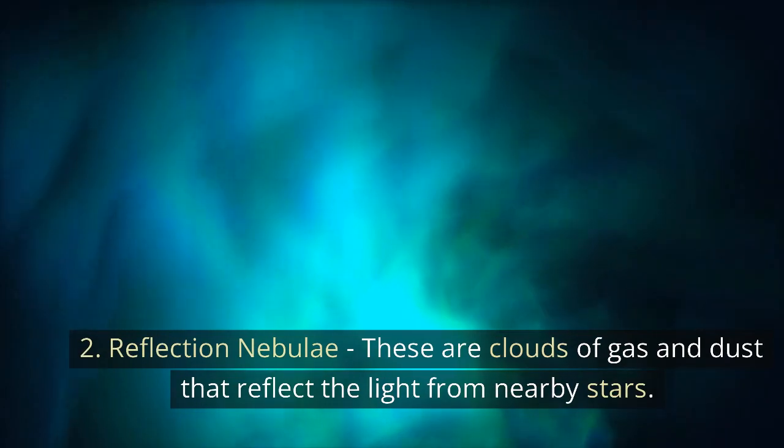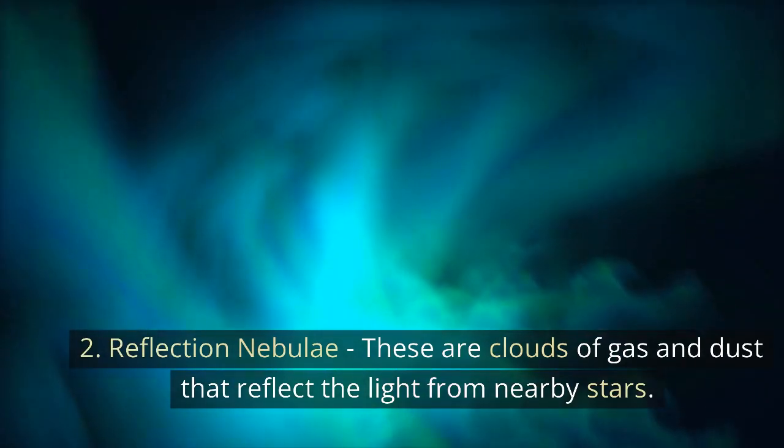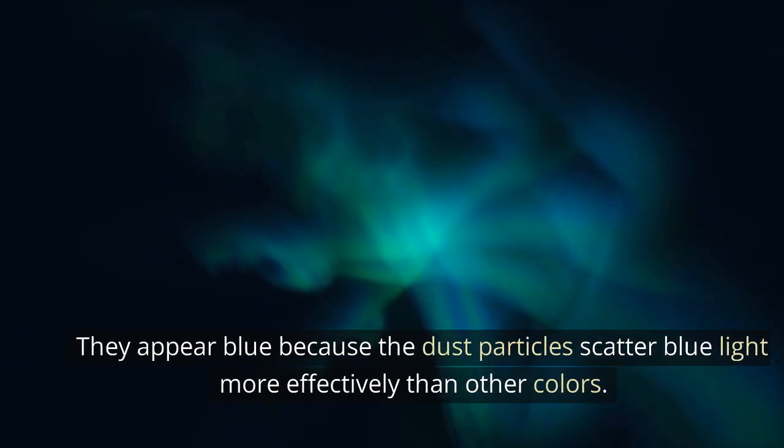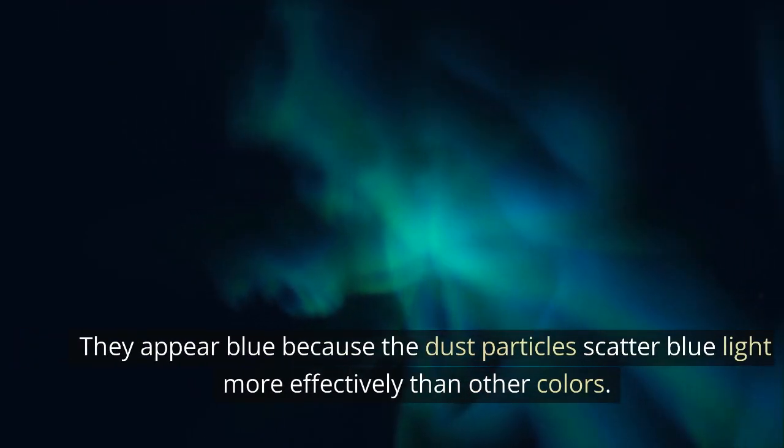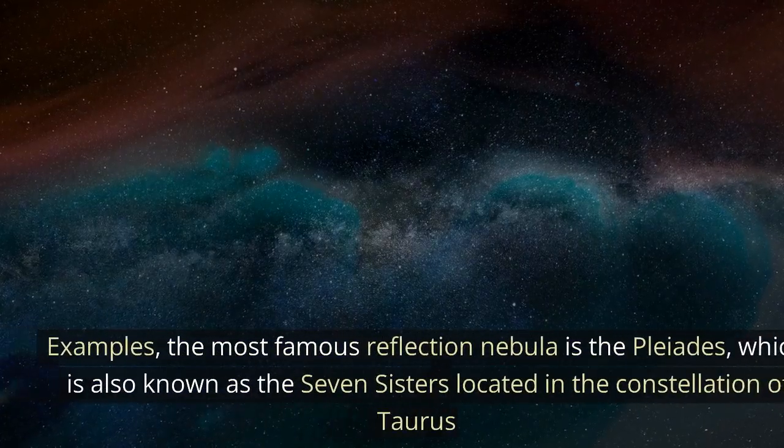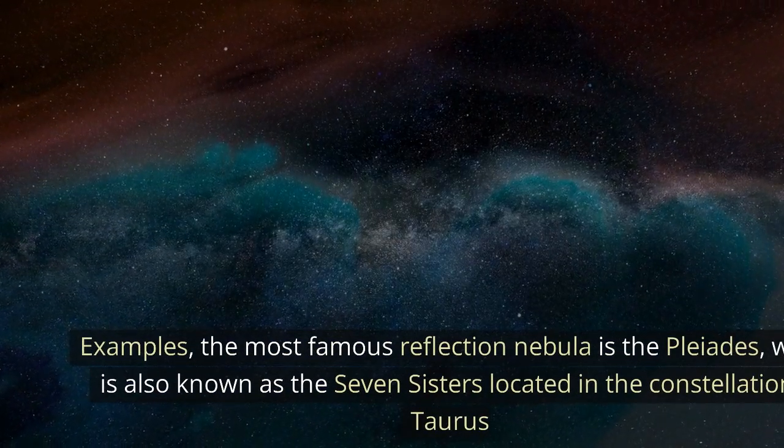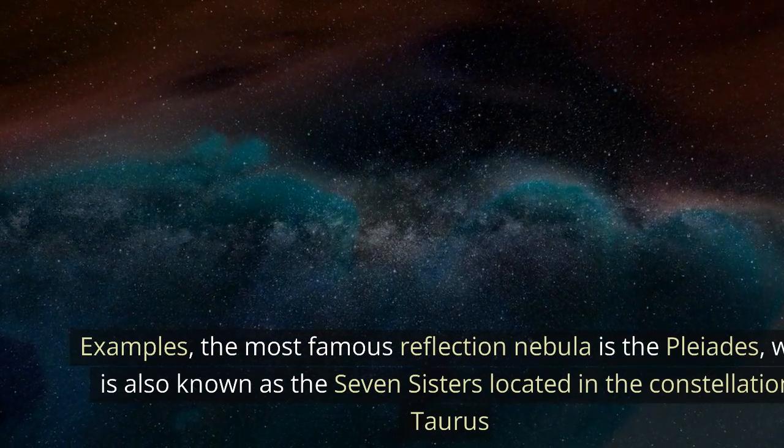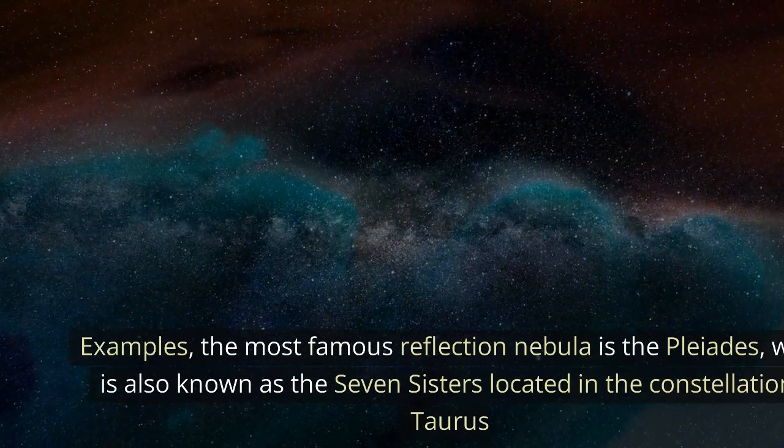2. Reflection Nebulae - These are clouds of gas and dust that reflect the light from nearby stars. They appear blue because the dust particles scatter blue light more effectively than other colors. Examples: The most famous reflection nebula is the Pleiades, which is also known as the Seven Sisters, located in the constellation of Taurus.